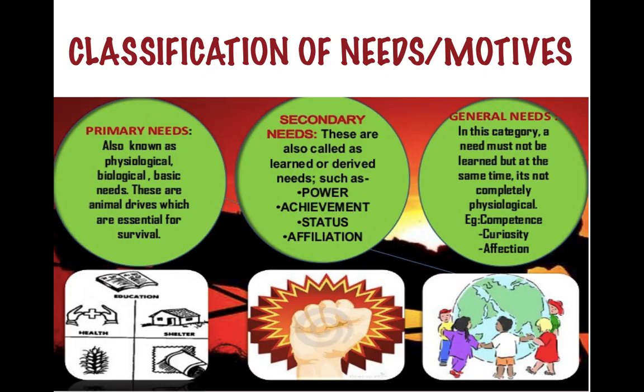Primary needs are also known as physiological, biological, or basic needs. These are the animal drives which are essential for survival, and include food, shelter, clothing, good health, education, etc. Secondary needs are known as learned or derived needs. They are not biological or basic in nature, and include power, achievement, status, and affiliation.